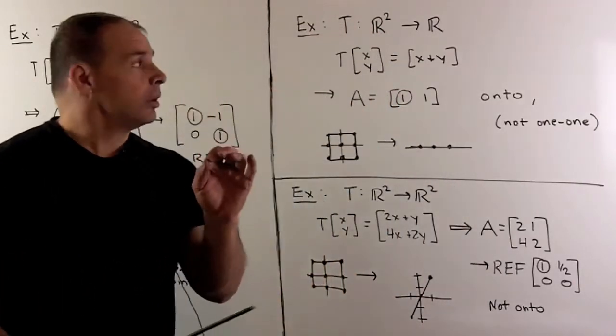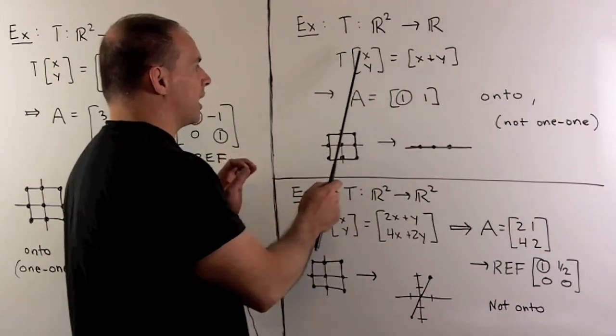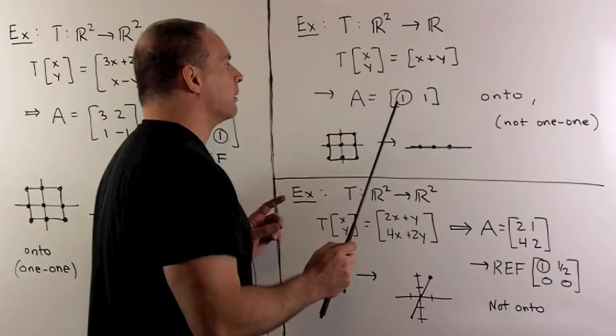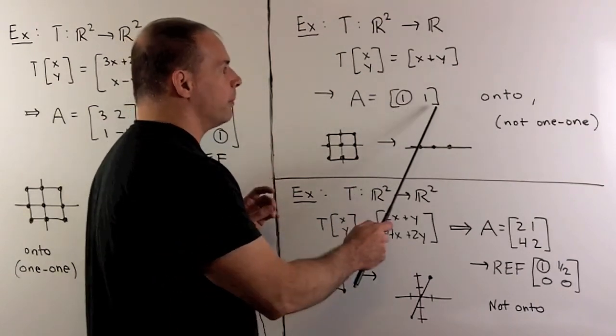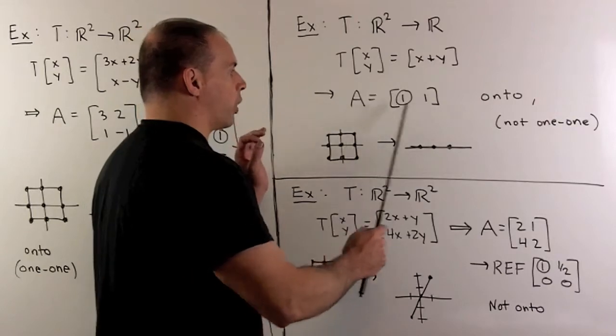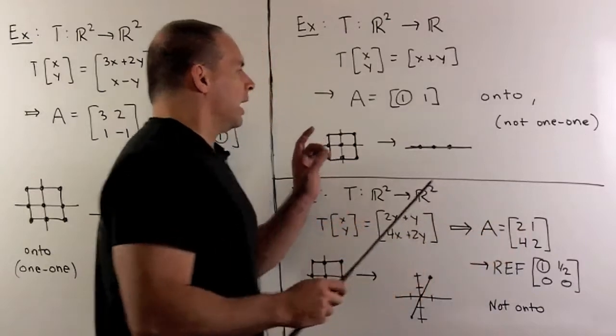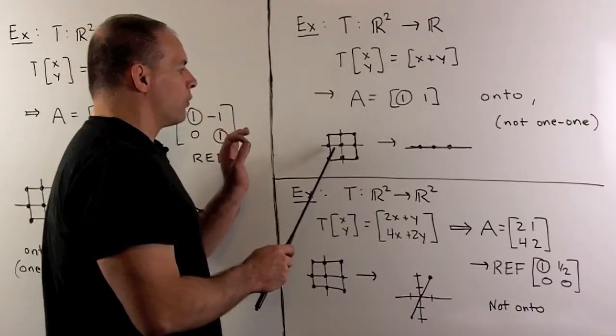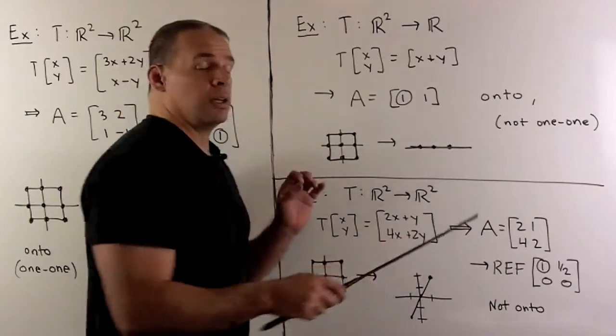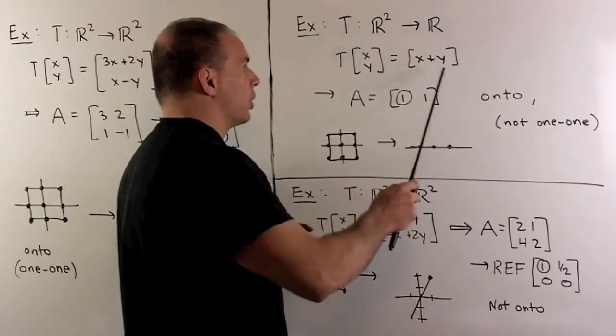Another example. Take the linear transformation from R2 to R, given by sending x, y to x plus y. Now, the A matrix here is already in row echelon form. I have a pivot in each row. So this is onto. Okay, it's not one-to-one. And if we take a look at the pictures, we're going to send this grid over to the real line. So it hits every point in the space on the right.